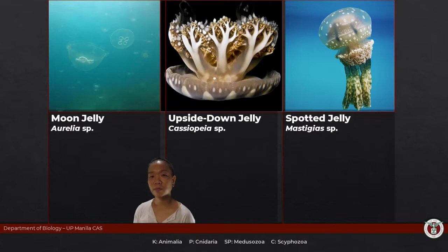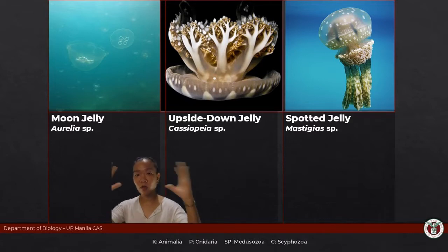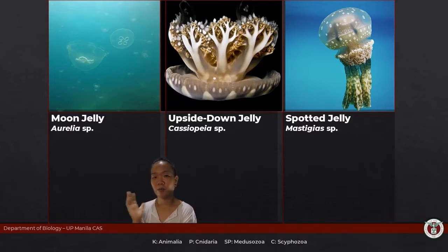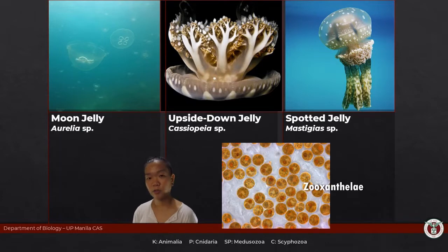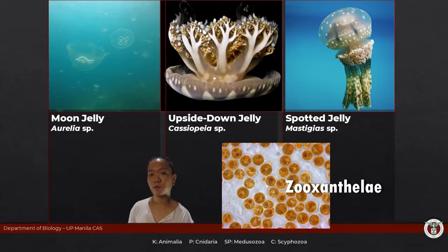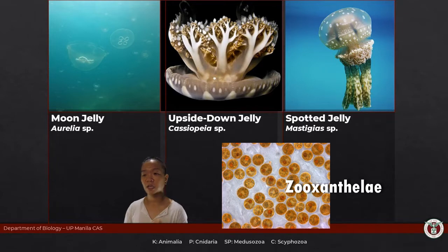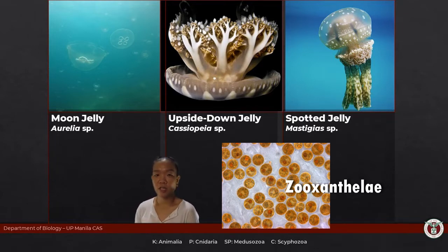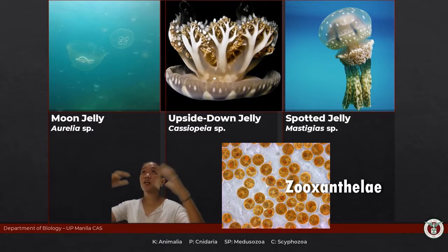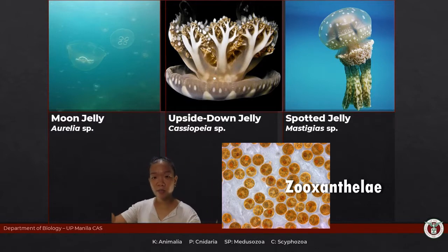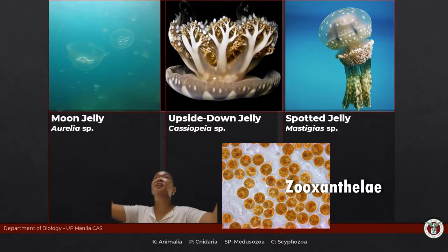Cassiopeia is an upside-down jellyfish. Its oral arms house zooxanthellae — symbiotic algae. Sugars produced by the algae through photosynthesis benefit the cnidarian, while in exchange the algae gets a free place to live, free carbon dioxide, and other nitrogenous waste. That's why Cassiopeia is upside-down: its oral arms, where the photosynthetic algae reside, need to be facing towards sunlight.